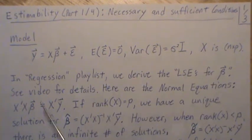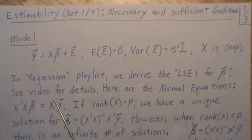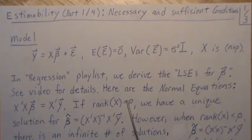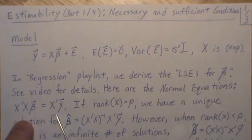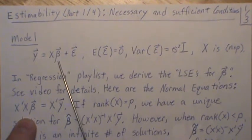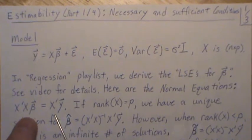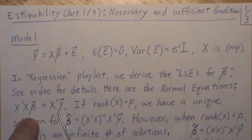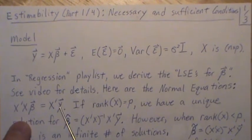Now in my regression playlist, we derived the least squares estimates for the betas — see that video for details. Here are the normal equations. So when you're doing least squares estimation, you take derivatives and you end up with this equation. This is the standard equation; you have a vector of unknowns, the x's are known, and the y's are known.